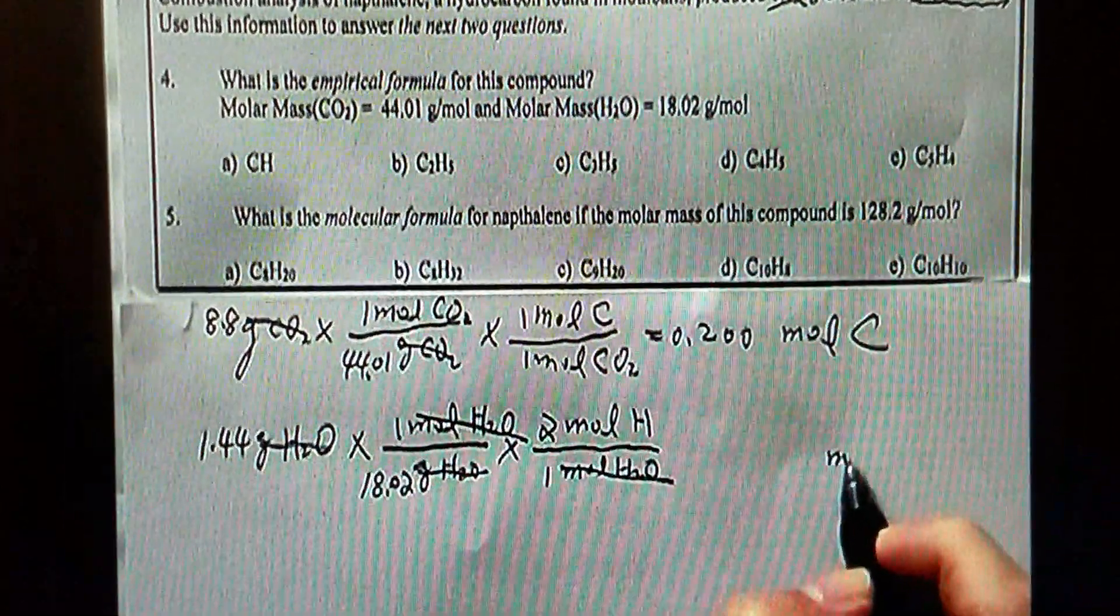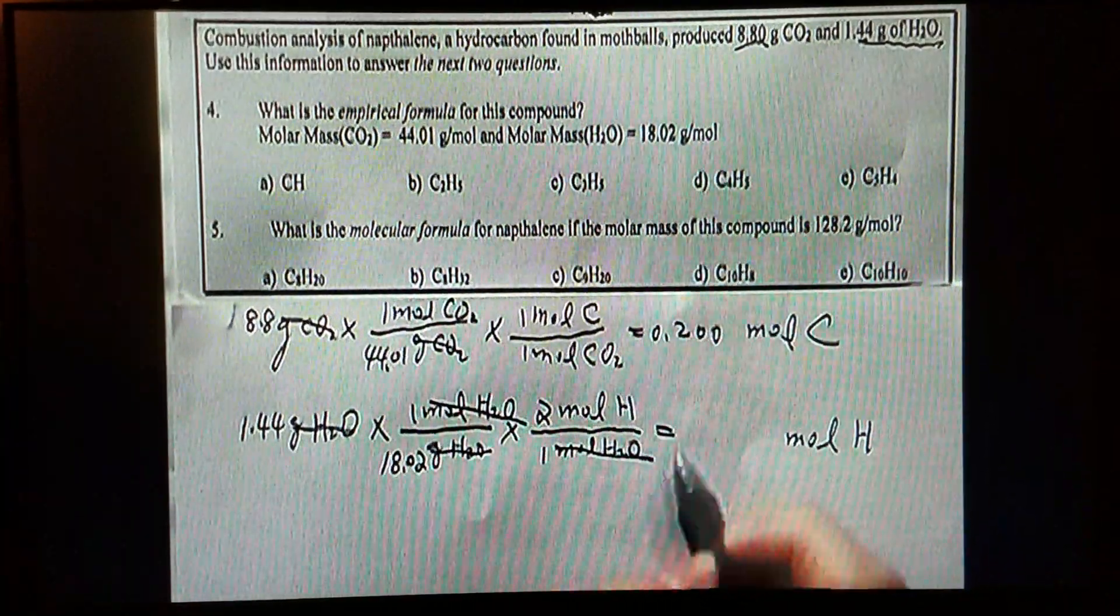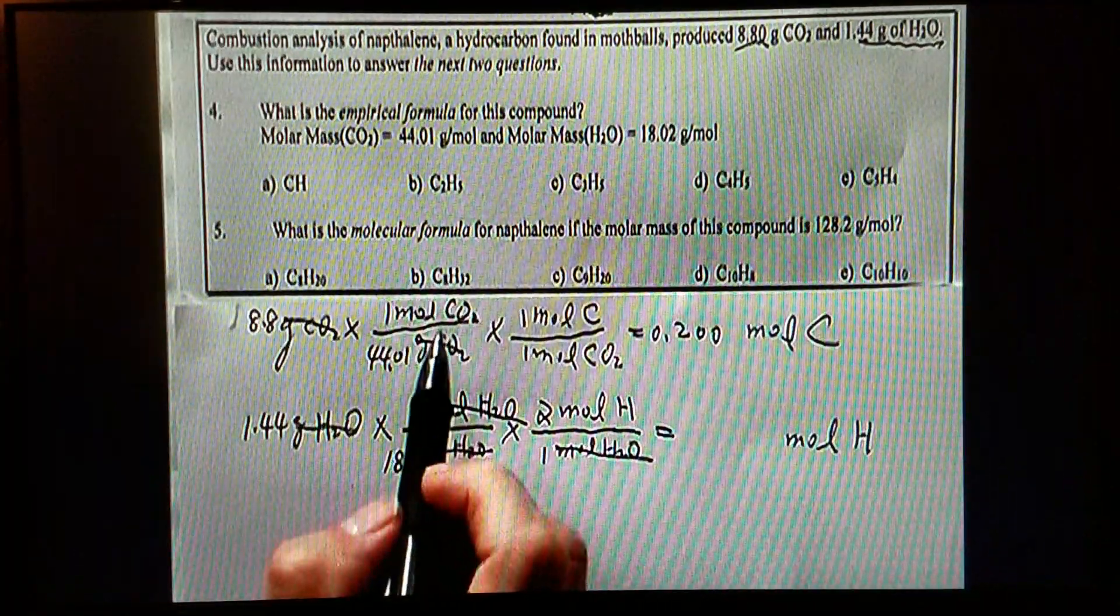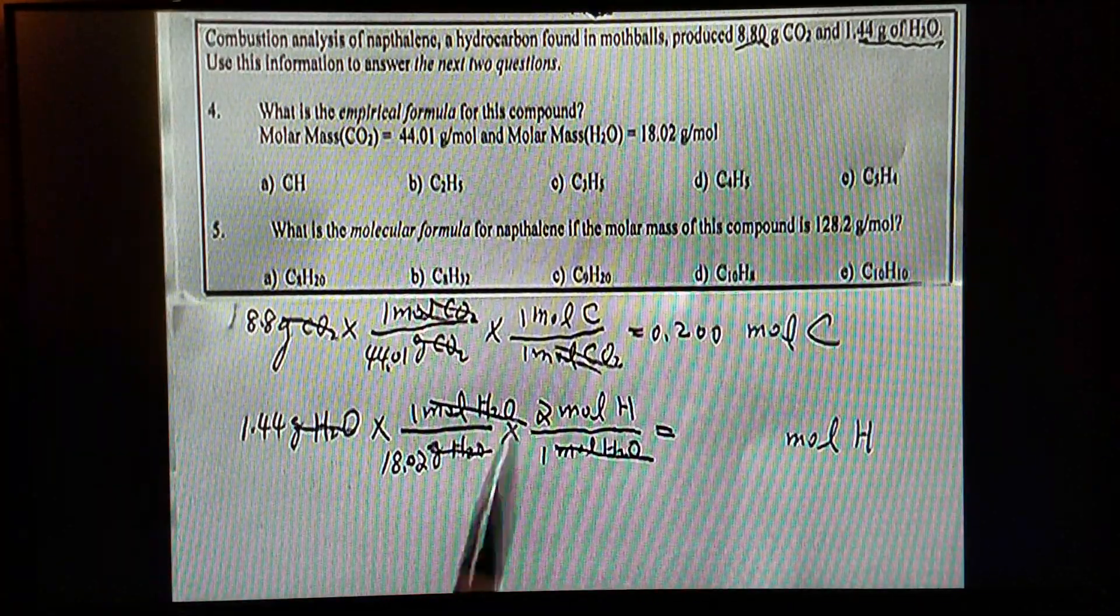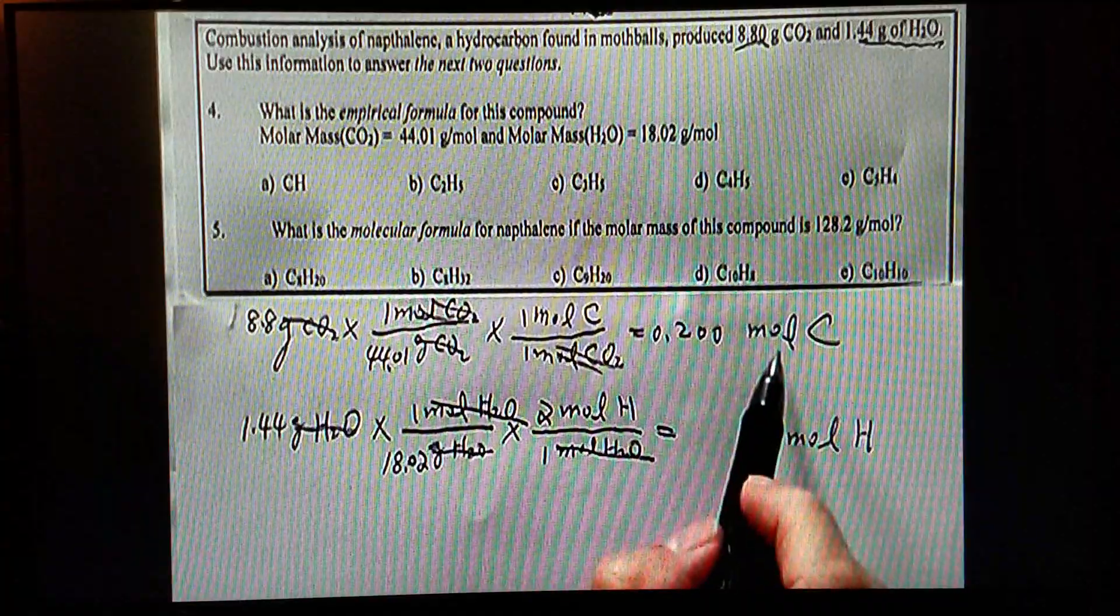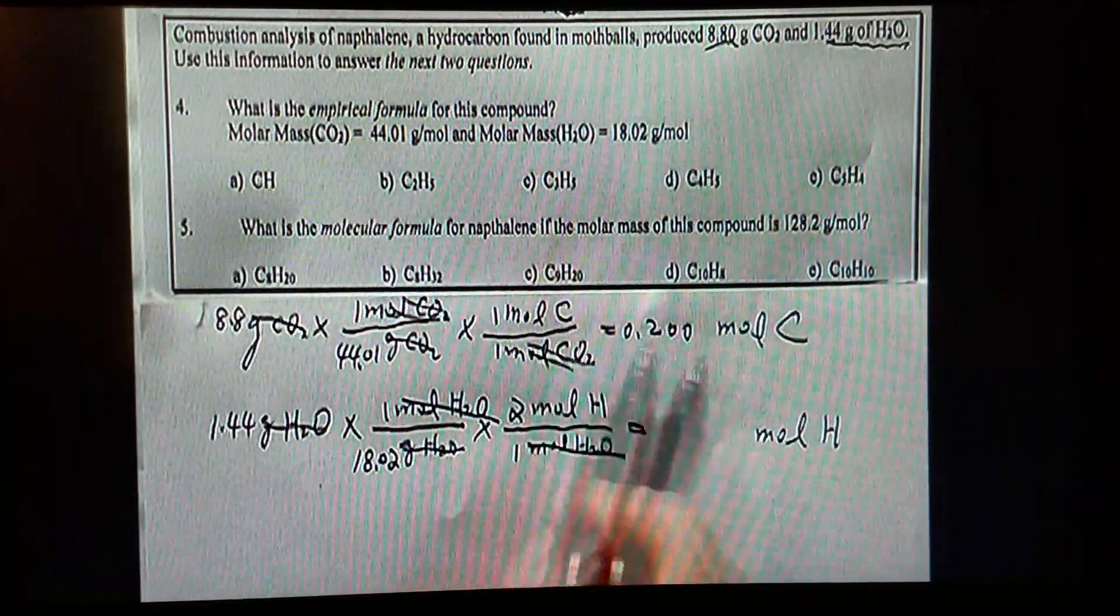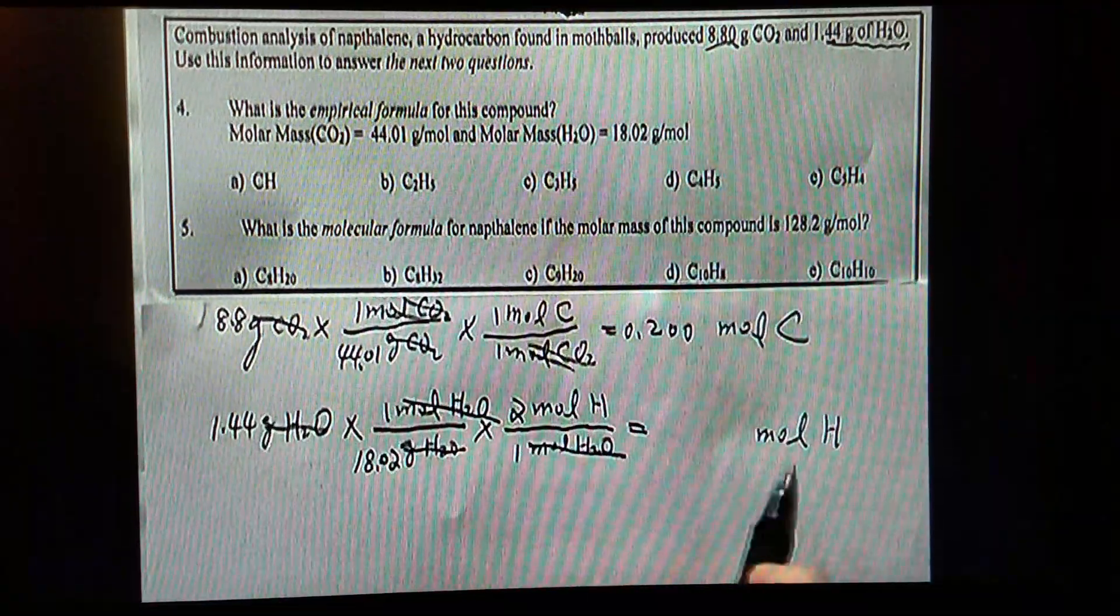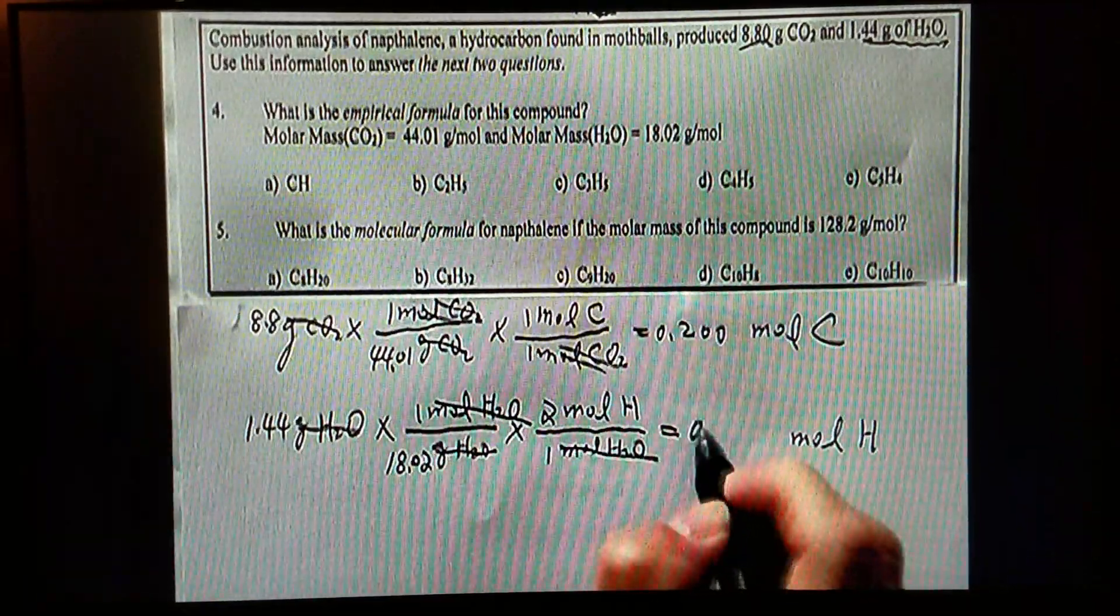The final answer, the unit for the final answer is moles of hydrogen. Just like in the previous calculation, moles of CO2, they are gone. Therefore, the unit for the final answer should be moles of carbon and moles of hydrogen. And what is that value? That's 0.16.